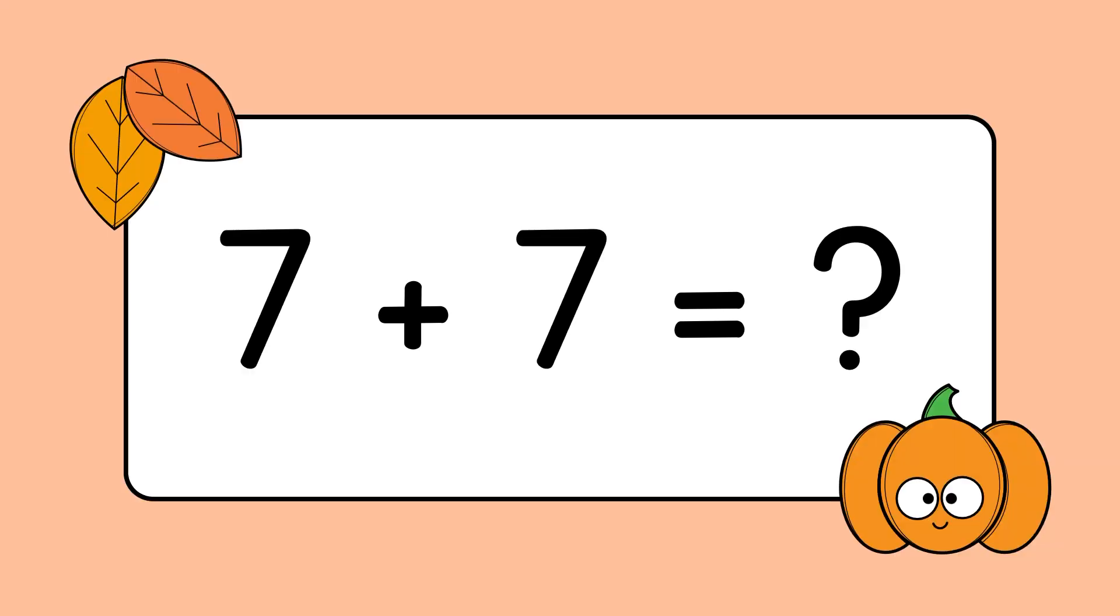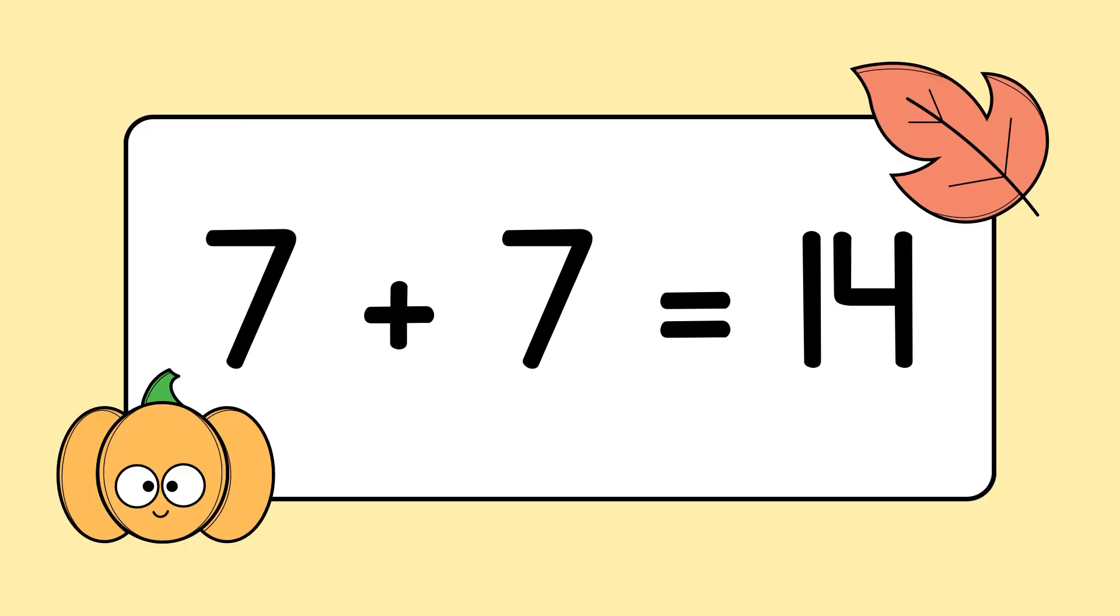What is 7 plus 7 equal to? 7 plus 7 is equal to 14.